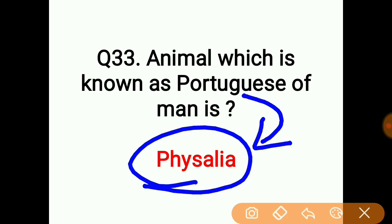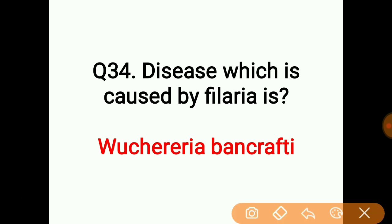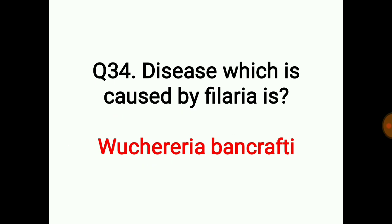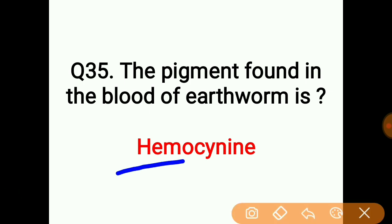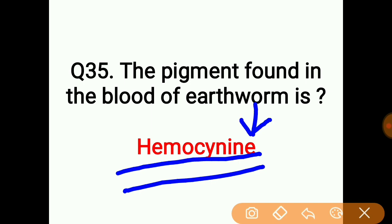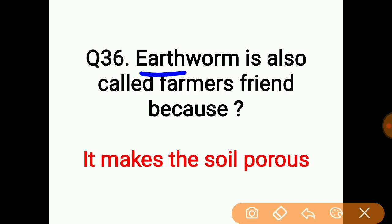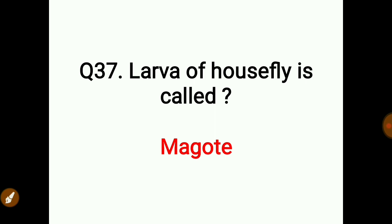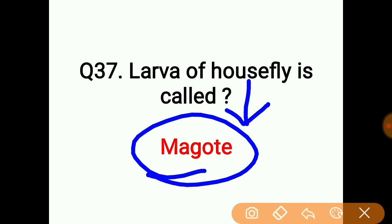The animal known as the Portuguese man-o-war is Physalia. The disease caused by filaria is transmitted by mosquitoes. The pigment found in the blood of earthworms is hemocyanin. Earthworm is called the farmer's friend because it makes the soil porous. The larvae of a house fly is called a maggot.